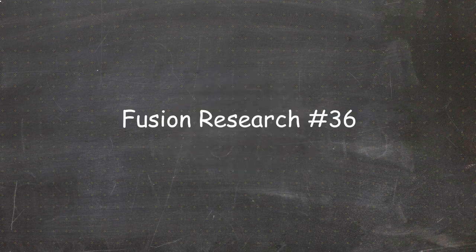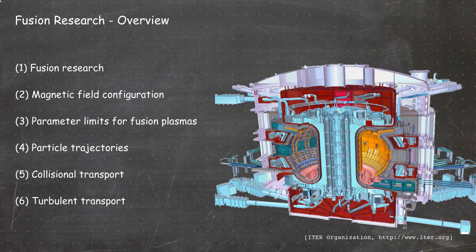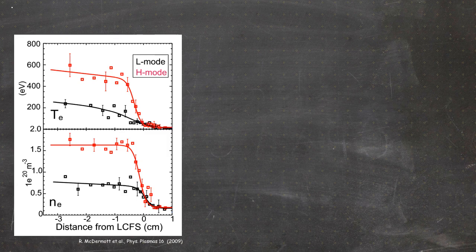Hello and welcome to video number 36 of the Fusion Research Lecture. We are in Chapter 6, Turbulent Transport. In the last videos we talked about turbulence in plasmas, turbulence measurements, and how this turbulence is created, and that this turbulence is responsible for the majority of the transport observed in fusion plasmas. In this video, we will talk about a way to reduce the transport. The topic of today's video is transport barriers.